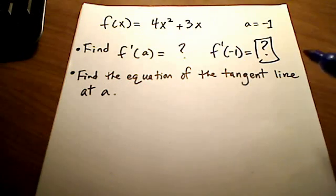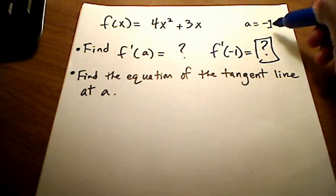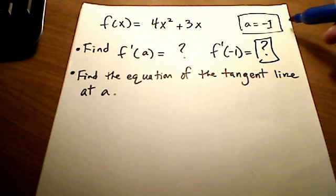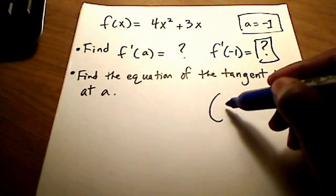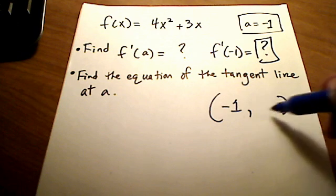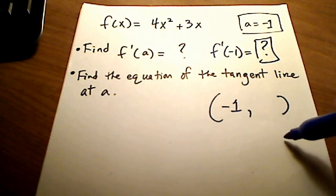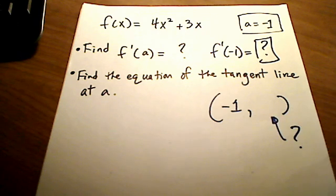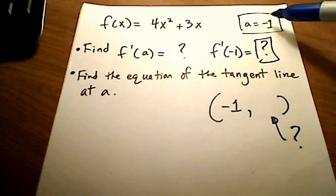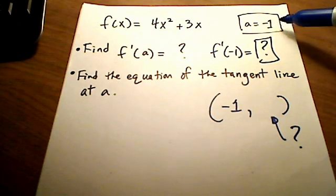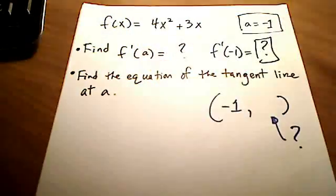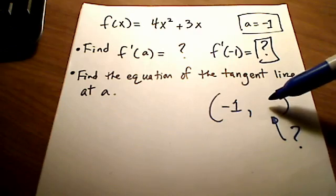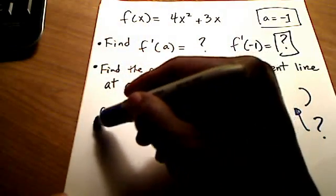What they didn't give us, though, and I wish they had done this, I wish they had given us a coordinate. Instead of just one value, a of negative 1, why don't they give us a coordinate? But we can figure that out pretty easily. So, we have some x value of negative 1. What I don't know is I don't know what this y over here is going to be just yet, so I wish they had given me a point.